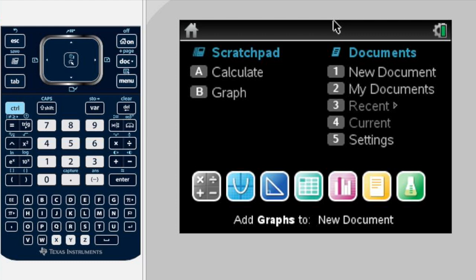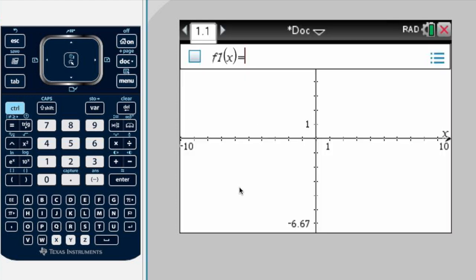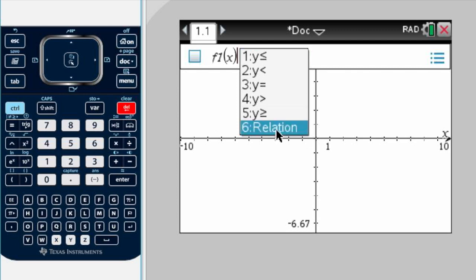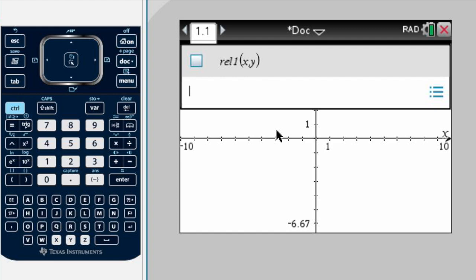We are going to start by graphing this equation. We are going to open a graph page, and where we are asked to put our function, we will delete the equal sign and go to relation. This is because the equation is not in the f(x) or y equals form.